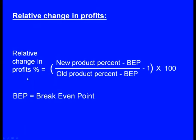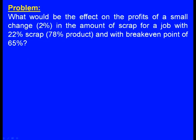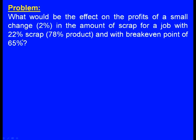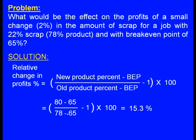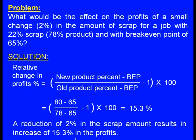The relative change in profits percentage = [(new product percentage − BEP) / (original product percentage − BEP) − 1] × 100, where BEP is the break-even point. For a job with 22% scrap (78% product) and BEP of 65%: if scrap is reduced by 2% (new product = 80%), relative change = [(80−65)/(78−65) − 1] × 100 = 15.3%. So a reduction of 2% in scrap results in an increase of 15.3% in profits.